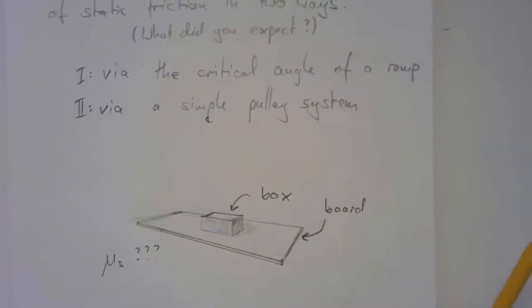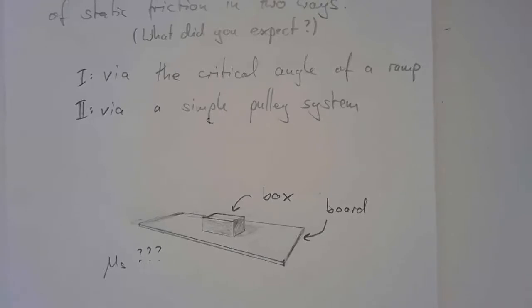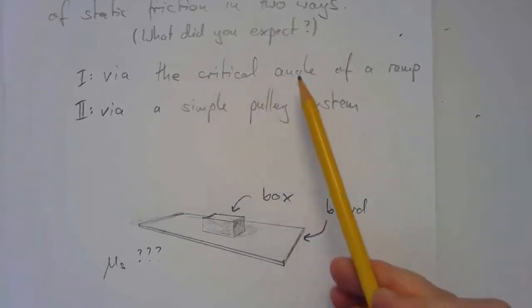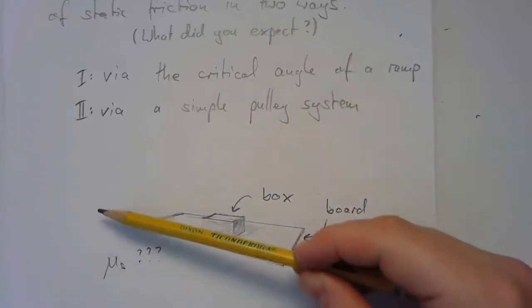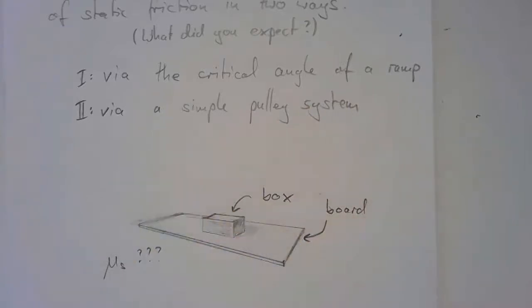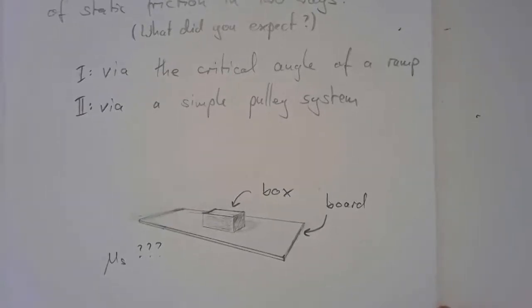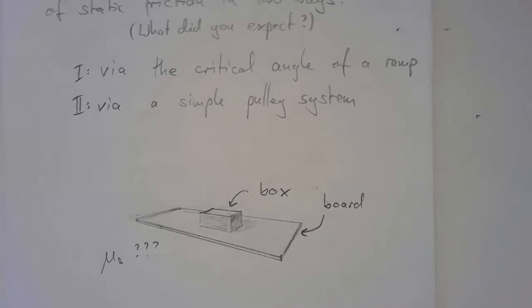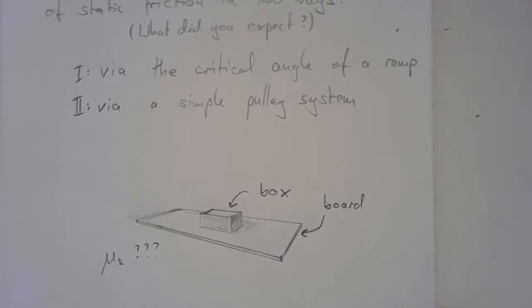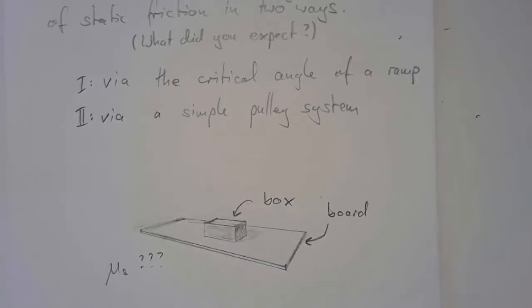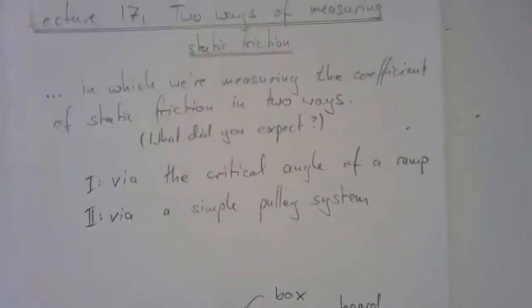We're going to do it via two ways, just as examples. This will show the thinking and the calculations. And first, we're going to do it via finding what you might call the critical angle of a ramp, where we're going to incline this board until the box starts to slide. And then for our second method, we're going to imagine we're going to build a simple pulley system. Those are not the only ways of doing it. There are lots of other ways you could imagine.